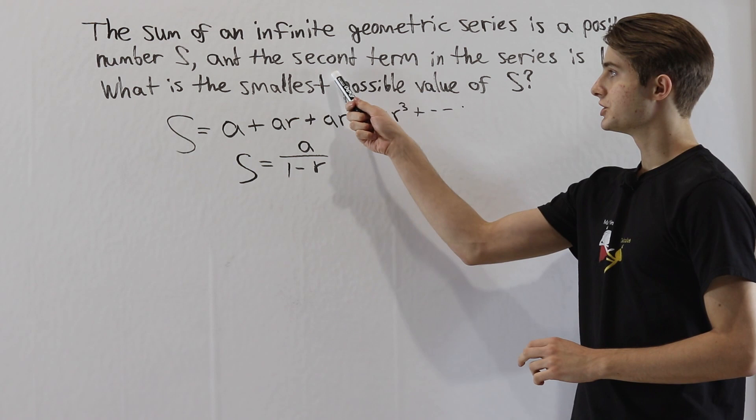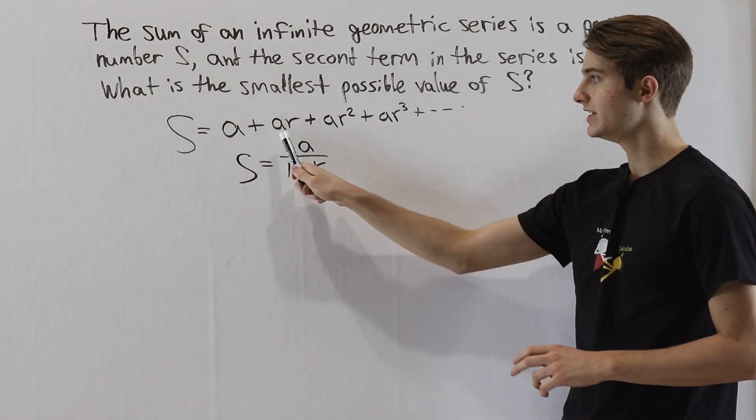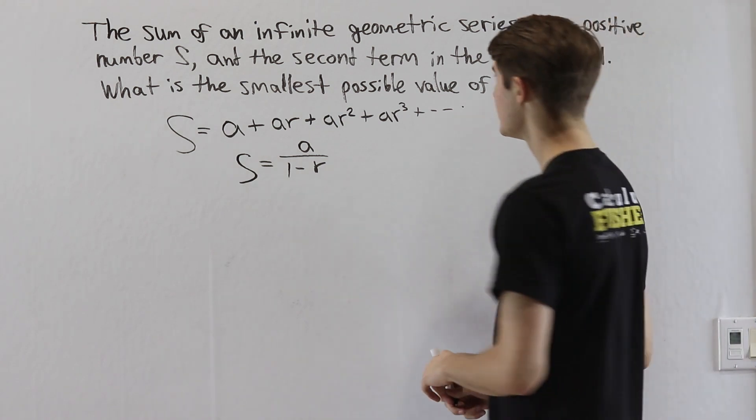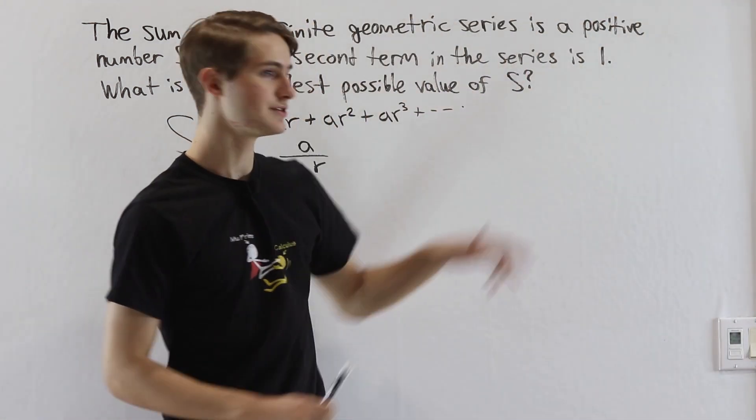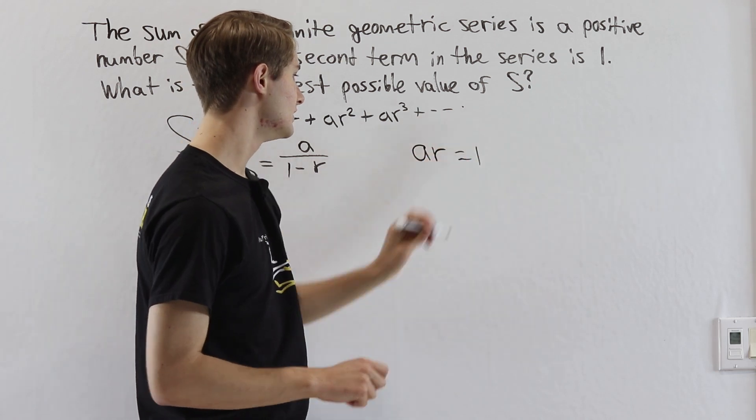Now we want to take a look at this condition about the second term. We know that the second term in our series is ar, this one right here, and it is equal to 1. So that means we have an additional piece of information that ar is equal to 1.